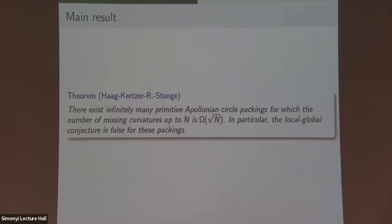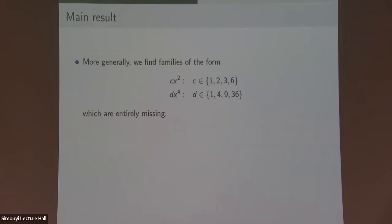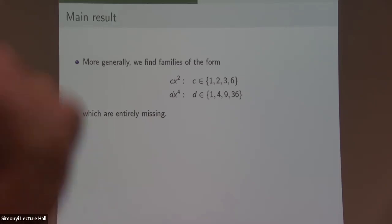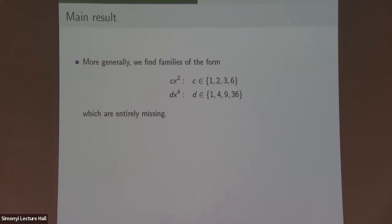This brings us to the main result: there are infinitely many Apollonian circle packings for which the number of missing curvatures is lower bounded by a constant times √N. In particular, that goes to infinity, so the local-to-global conjecture is false for these packings. More generally, for each packing we find families that are either a constant times a square or a constant times a fourth power (with the constant being one of four specific numbers), these families are entirely missing, and infinitely many of them could actually appear based on mod 24. We call these reciprocity obstructions because they arise from reciprocity laws.